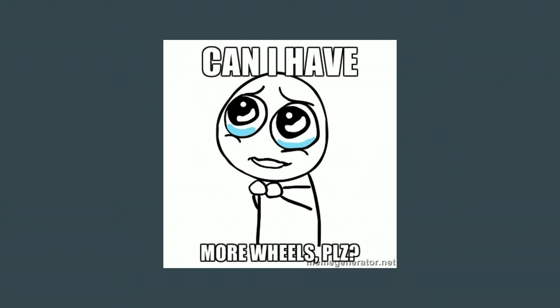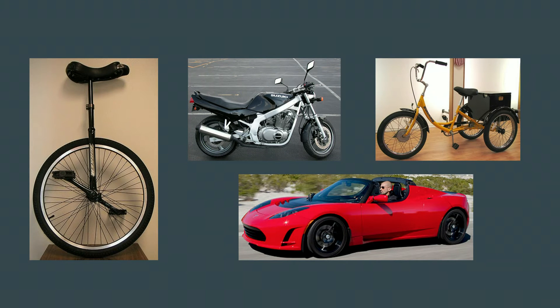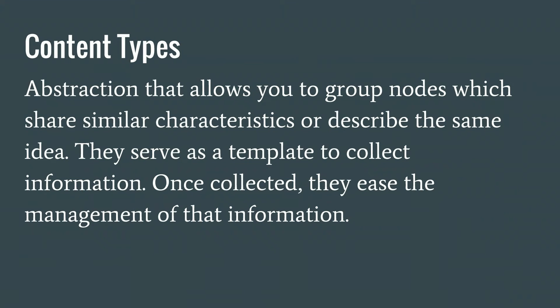Can we have more types? Yes. Let's imagine we sell motorcycles, three-wheelers, cars, and bikes. When we have different objects or different ideas, we have to make groupings of them, and those groupings are called content types. A content type is an abstraction that allows grouping nodes that share similar characteristics. For example, it doesn't make sense for a motorcycle to have a field for windows — motorcycles don't have windows, but cars do. There are specific things about each type of content that are unique to the group they belong to.